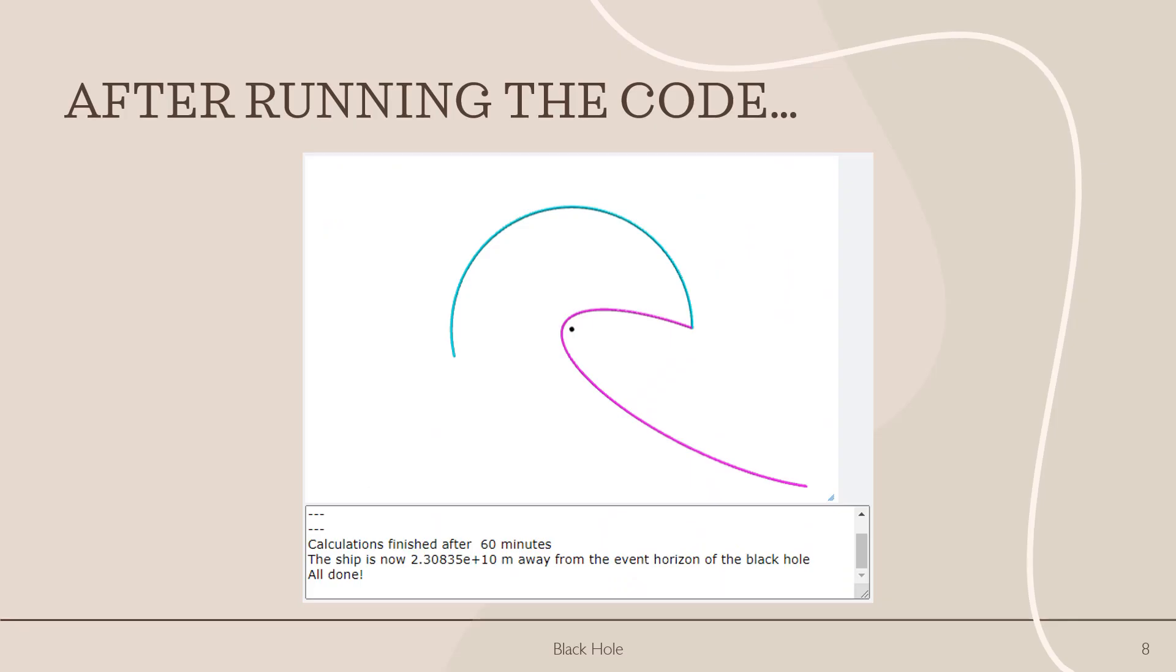And boom, here we have our graphic. And in this graphic, the aqua orbit is actually the planet and the purple orbit is our spaceship. Now you'll see the spaceship does get very close to the black hole, but fortunately for us, we don't get sucked in.